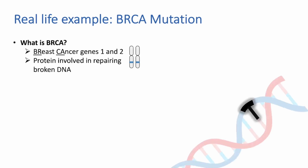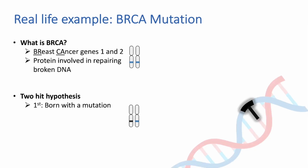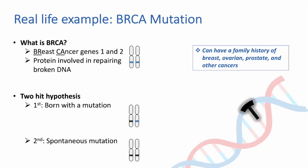A real-life example of tumor suppressor genes are the BRCA1 or BRCA2 genes. BRCA stands for breast cancer genes 1 and 2. These genes are responsible for making proteins that help repair broken DNA. For instance, sometimes people are born with one mutation in one allele of the BRCA1 gene, and then another spontaneous mutation or a second hit can occur in the other allele of the BRCA1 gene later in life. As a result, they have now lost their BRCA1 tumor suppressor gene, putting them at risk for ovarian cancer, breast cancer, prostate, or various other cancers.